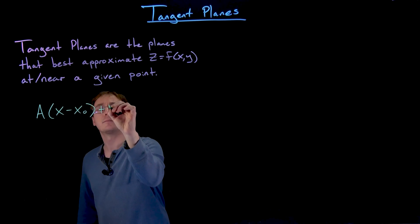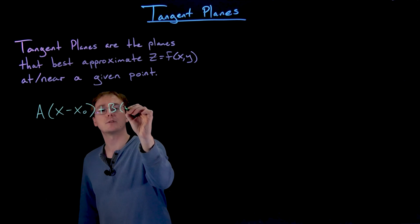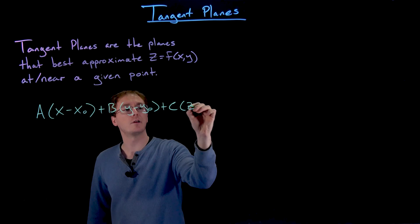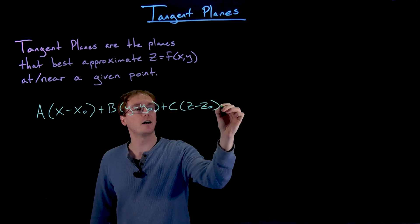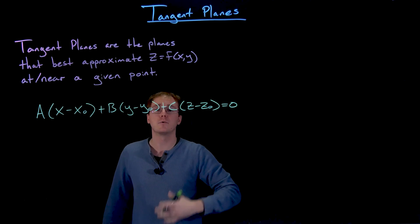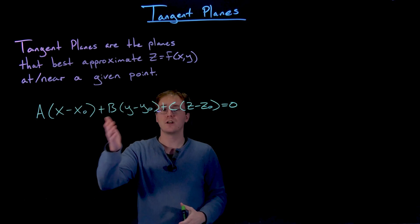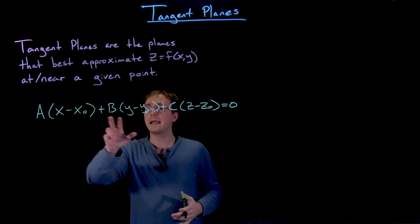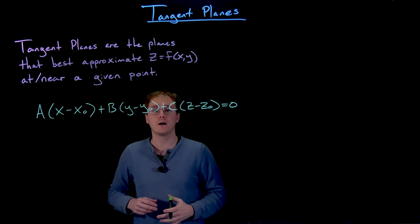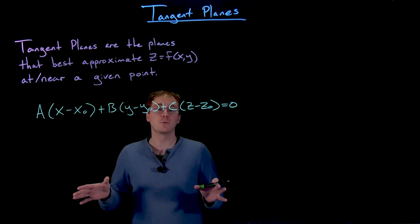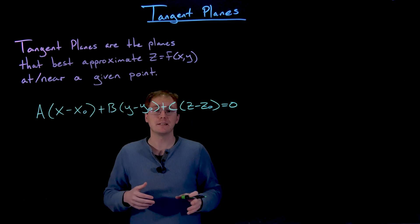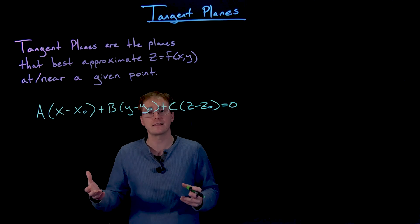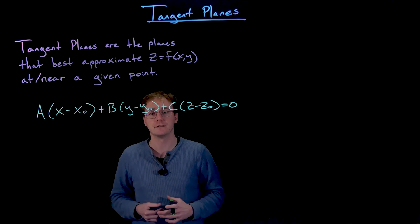We can write the equation of a plane as a times the quantity x minus x-naught, plus b times the quantity y minus y-naught, plus c times the quantity z minus z-naught, all equal to zero. Here x-naught, y-naught, and z-naught represent coordinates of a point the plane goes through, and a, b, and c are the components of the normal vector to our plane. We won't need cross products to find these values — there's a much simpler way using partial derivatives.